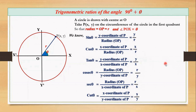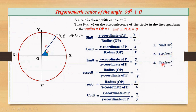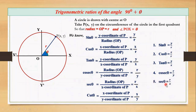Now let's write the conclusion. In the first line we have sin theta equals y by r. Second, cos theta equals x by r. Third, tan theta is y by x. Fourth, cosec theta is r by y. Fifth, sec theta equals r by x. And the last one, cot theta is x by y.